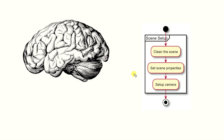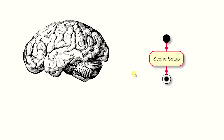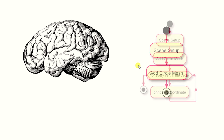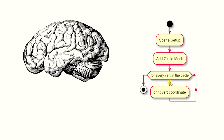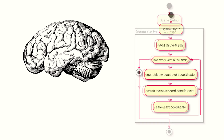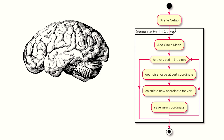Before we start working on our script, let's get a mental model of what we want to achieve in this video. In the previous video we created some code that sets up the scene. In this video we're going to add a circle mesh, get all the coordinates of its vertices, loop through every vert, get a noise value at each location, calculate a new location, and save that into a list. We're going to group all of this logic and name it 'generate Perlin curve' so we can reference this part of our script by that name. Make sure to keep the big picture in mind.